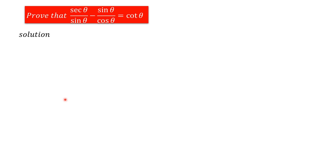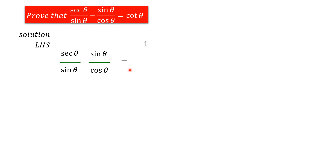For this, we consider the left hand side value. The left hand side value is secant theta divided by sin theta minus sin theta divided by cos theta. Secant theta value is the reciprocal of cos theta, that is 1 by cos theta. So, we substitute 1 by cos theta instead of secant theta, giving us 1 by cos theta, whole divided by sin theta, minus sin theta by cos theta.